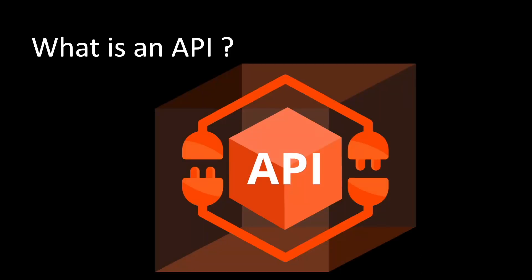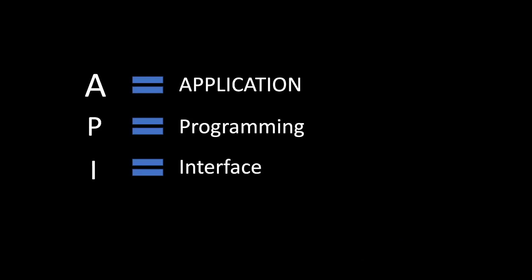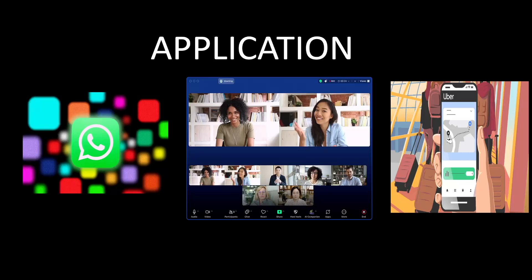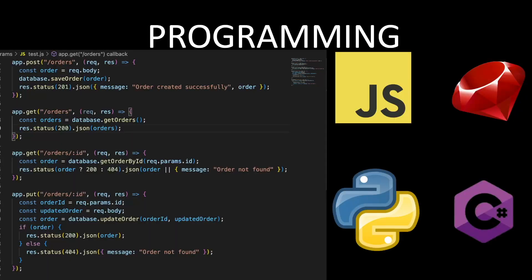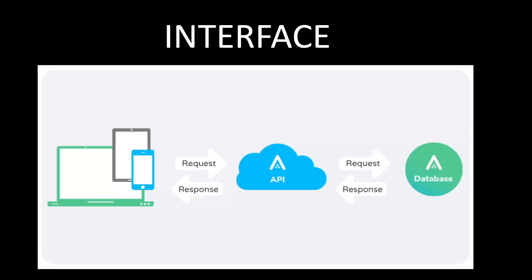What is an API? An API stands for Application Programming Interface. Let's break it down: 'Application' is any software that solves a specific problem or provides unique functionality — like WhatsApp or Zoom. 'Programming' is the process or language that tells the software how to work. 'Interface' is the protocol that defines how different applications talk to each other.